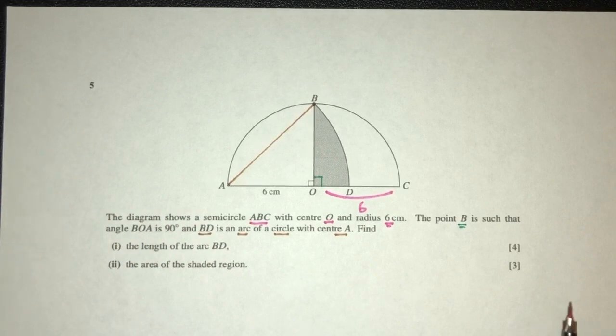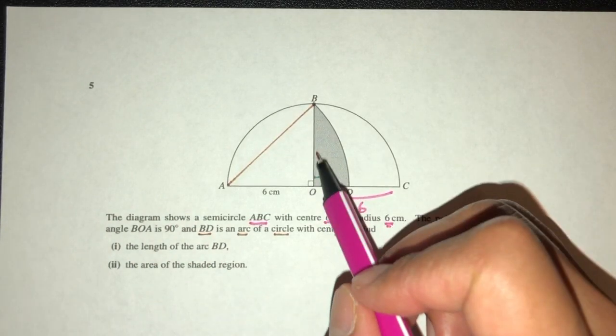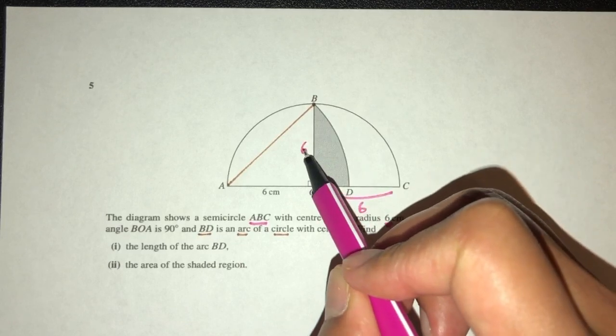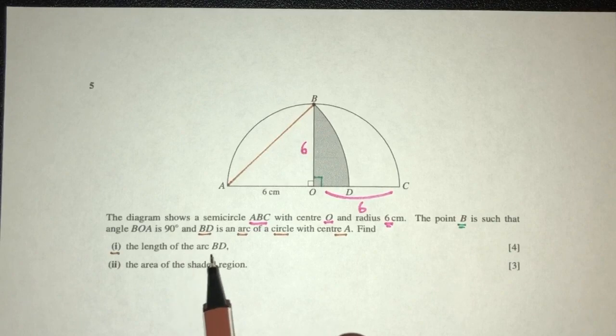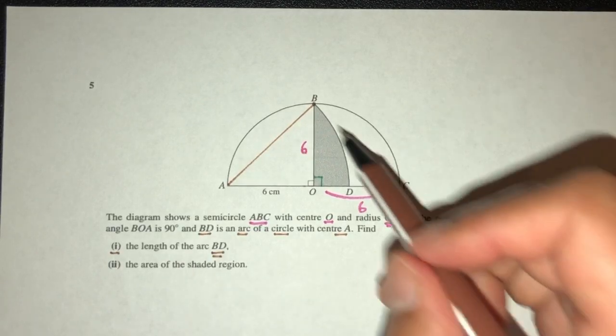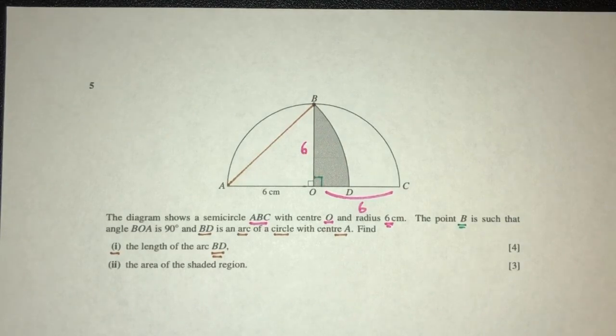Now let's move on with the questions. So here we have this, and this is also 6, the radius. Now part 1, we have to find the length of BD. So we have to find the length of the arc BD. Let's think, how can we find the length of arc?